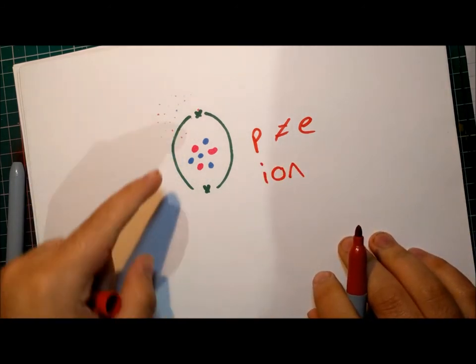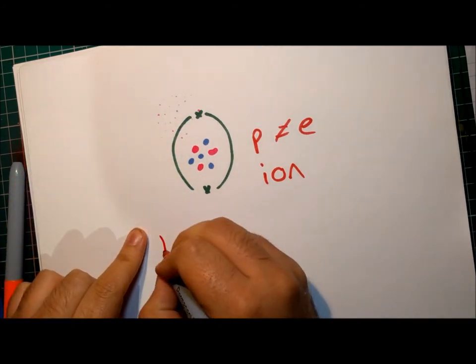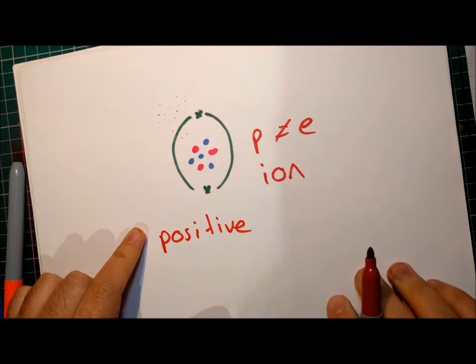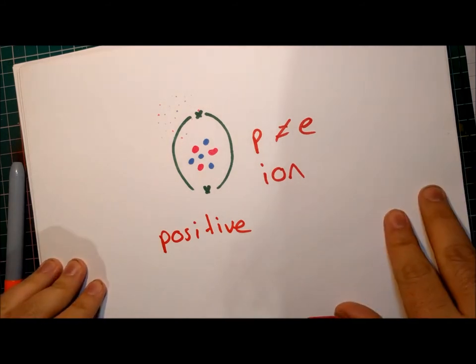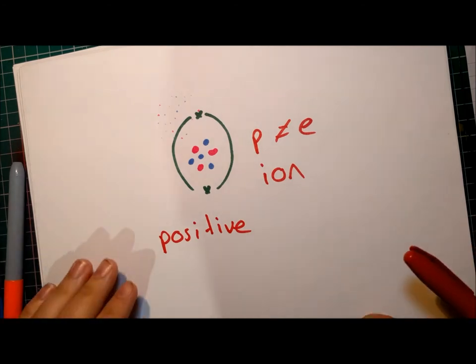Now for this ion, it has less negative charge than it has positive charge, so this is a positive ion. And all the metals form positive ions. I'm not going to go into that in any more detail at this point, otherwise we're going to end up studying chemistry, and this is a physics topic.